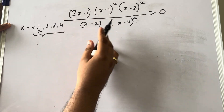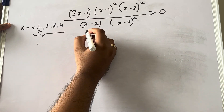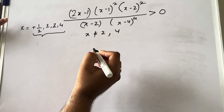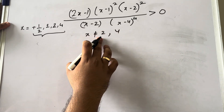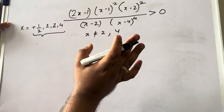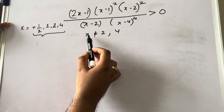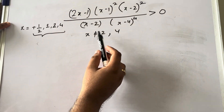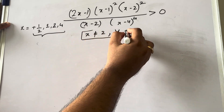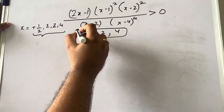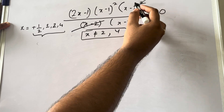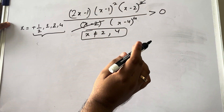Now, the denominator factors mean x cannot equal 2 and x cannot equal 4 — otherwise a division by zero (indeterminate form) occurs. So you must note: x ≠ 2 and x ≠ 4. Now you can cancel the common factor (x − 2) from numerator and denominator. This reduces the equation.